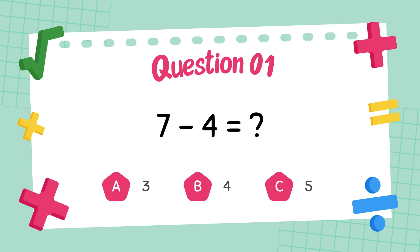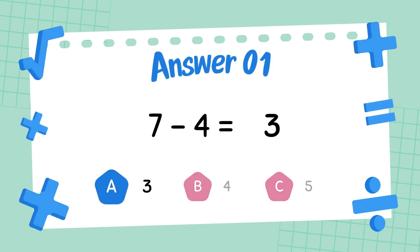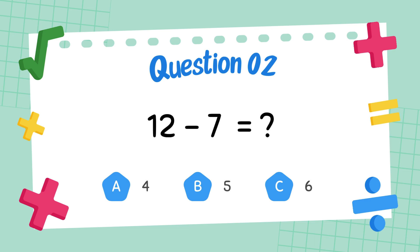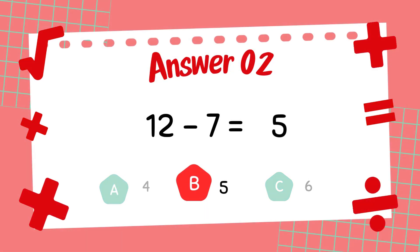What is 7 minus 4? The answer is 3. What is 12 minus 7? The answer is 5.